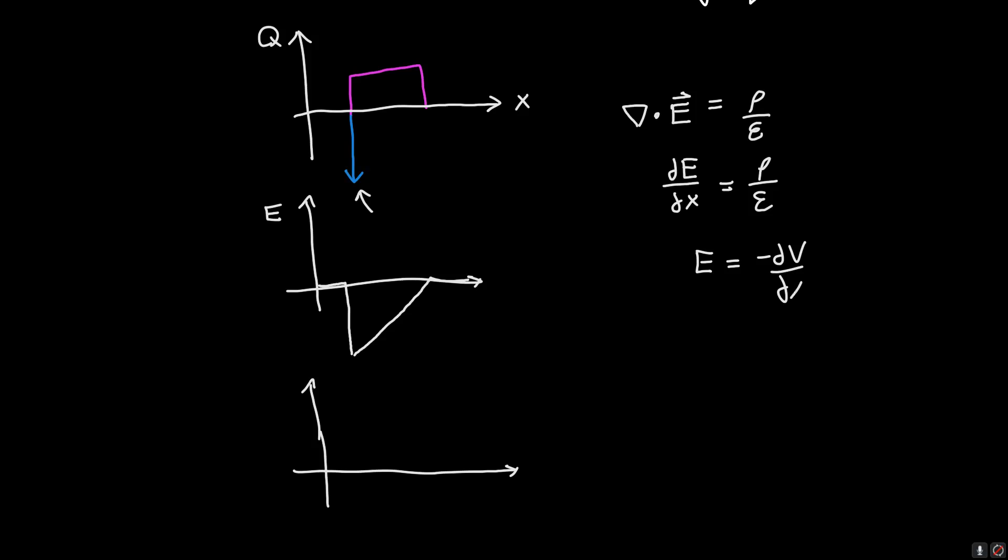If we calculate the voltage, we need to integrate this. What we see is that within this negative charge region, the integral is zero because we start integrating here at this point, and then it goes up from zero and slopes downward like half of a parabola.